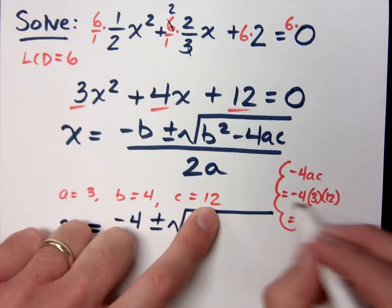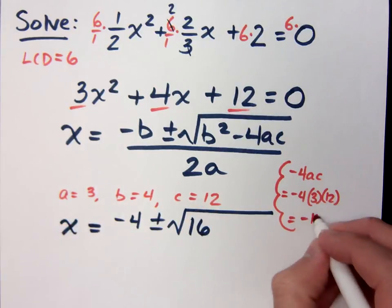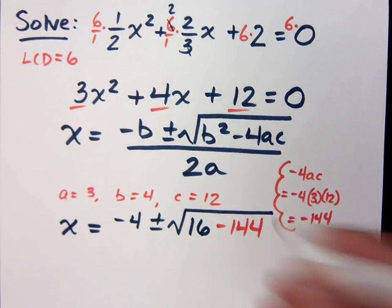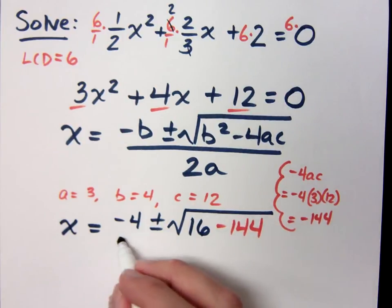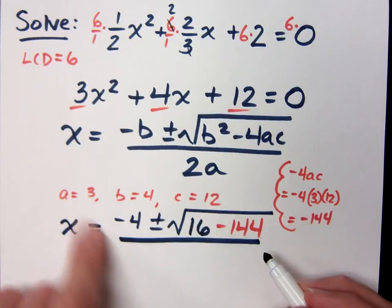So it's negative, because I only have one negative factor. 4 times 3 is 12, times 12 is 144. So minus 144, and this is all over 2a. Well, 2a, so that's 2 times 3, which is 6.